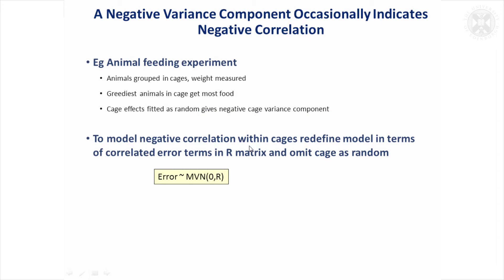But we said that's not allowed, so just to draw attention to the fact, you could redefine the model if you wanted to. You could take out those random cage effects and say, well I'm going to just model the error term and allow negative correlation between the animals in the same cage.